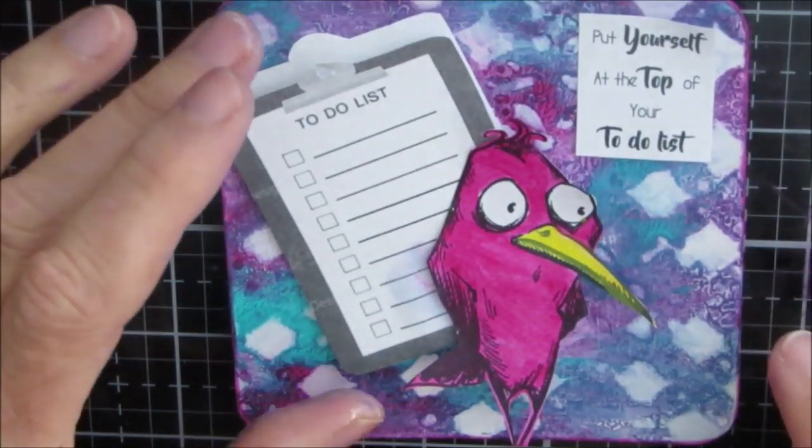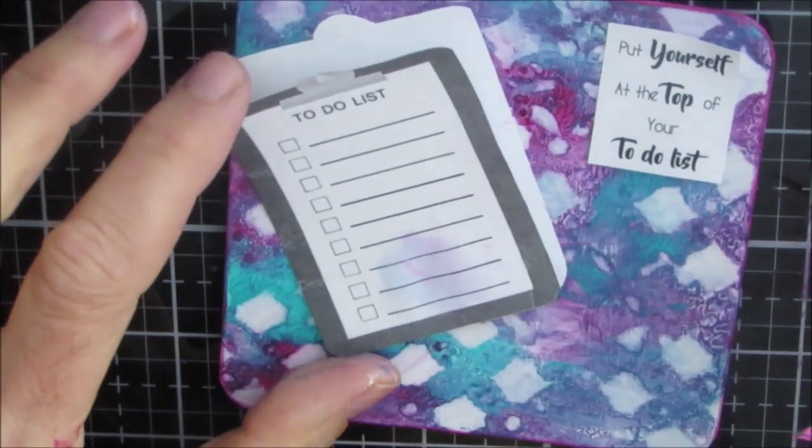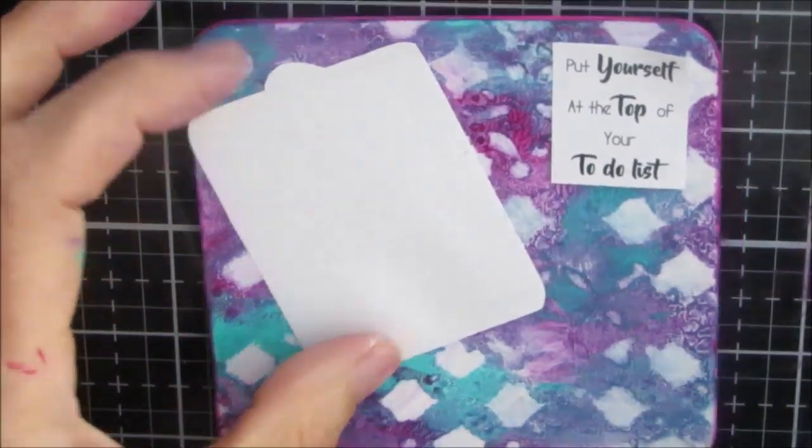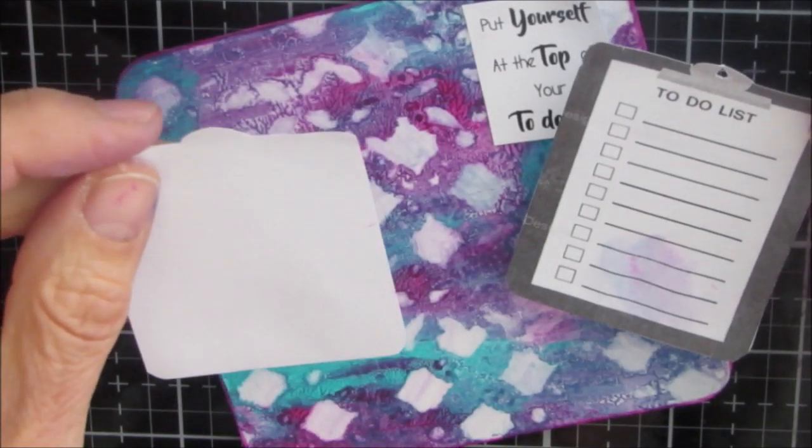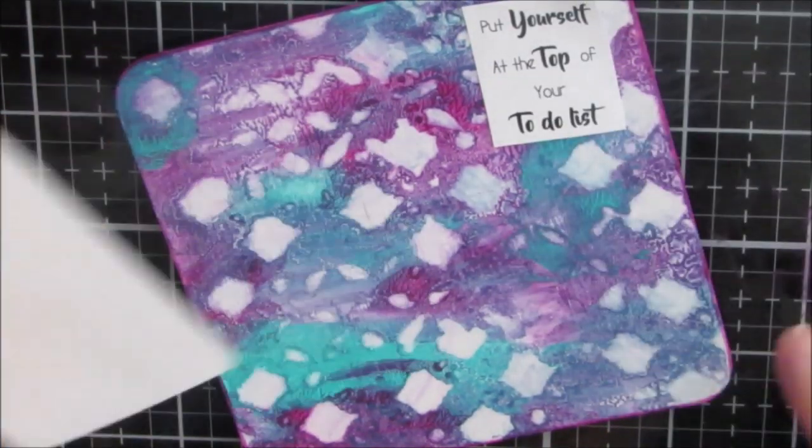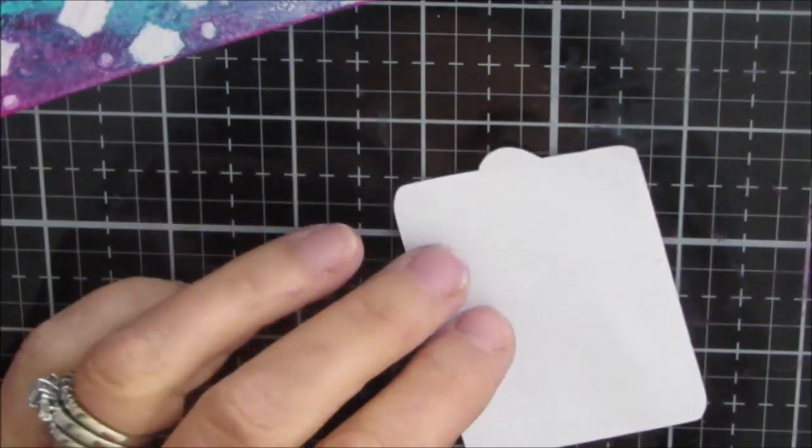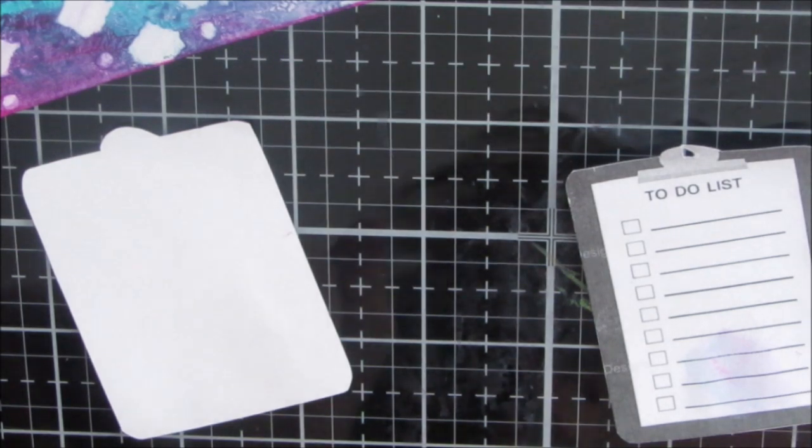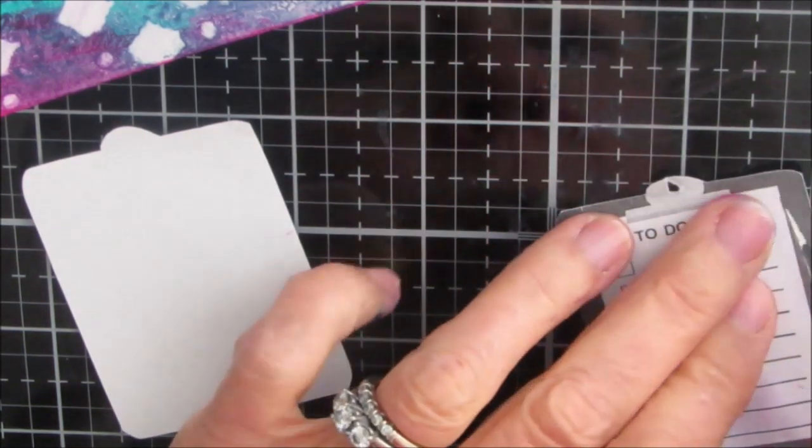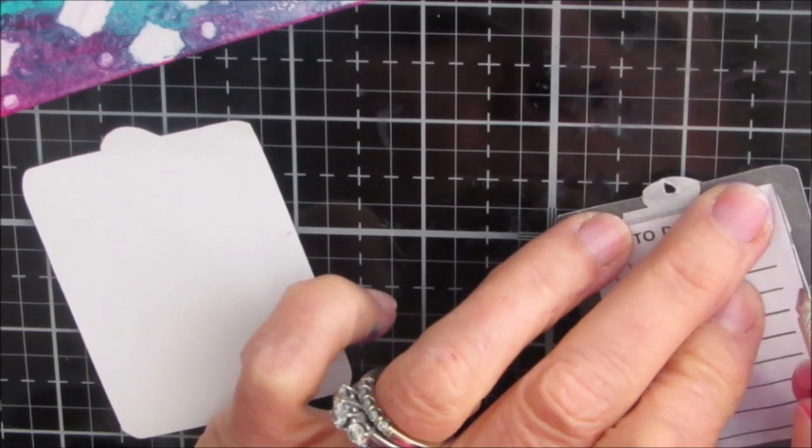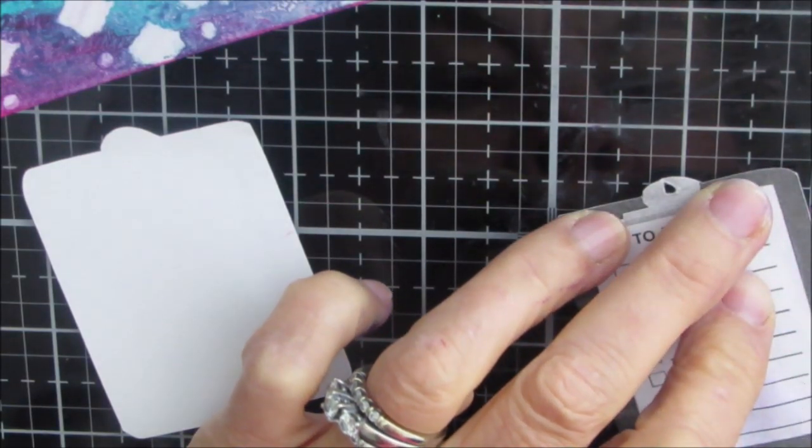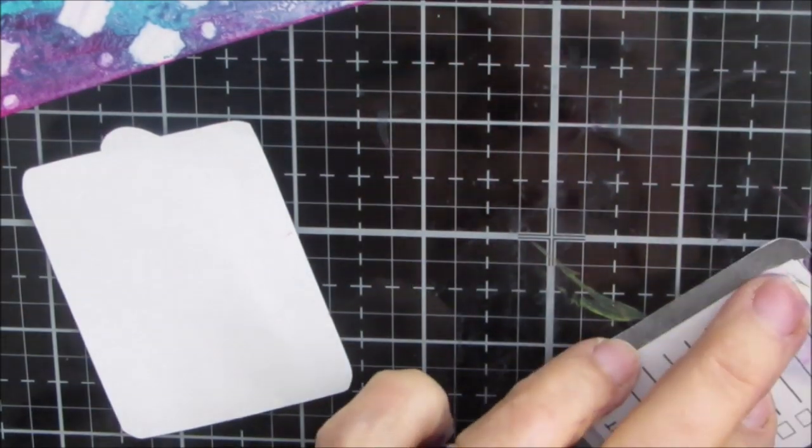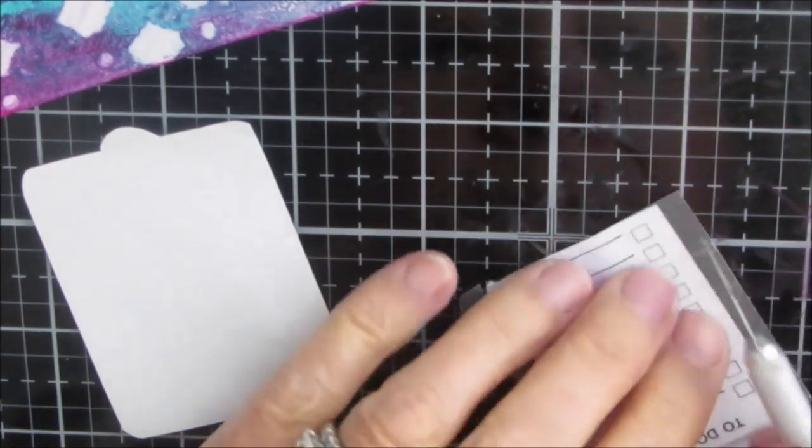And there is my quote. The quote that I have in here is one of the quotes that I have in my quote journal theme for this month, which is be you. And it says, put yourself at the top of your to-do list. So I cut out this clipboard separately, and it has this dark ring around it, and I'm cutting that off, and then I'm going to glue this onto the bottom piece.